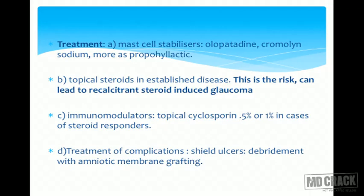Treatment of vernal conjunctivitis consists of medical and surgical therapy. Mast cell stabilizers such as olopatadine and cromolyn sodium are prophylactic and should be given before onset of an attack. Topical steroids are the hallmark treatment for established disease, but carry the risk of steroid-induced glaucoma in steroid responders. Immunomodulators such as topical cyclosporine 0.5% or 1% can be used in steroid responders or for steroid-sparing to prevent long-term steroid side effects.